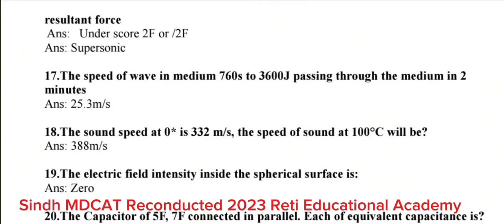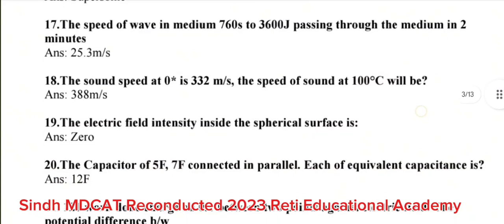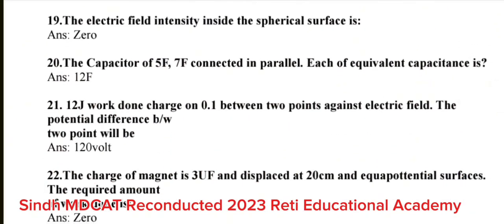Question number 19: The electric field intensity inside the spherical surface is? The correct answer is zero. Question number 20: The capacitor of 5F7F connected in parallel each of equivalent capacitance is? The correct answer is 12F. Question number 21: 12 Joules work done charge on 0.1 between 2 points against electric field. The potential difference between 2 points will be? The correct answer is 120V. Question number 22: The charge of magnet is 3UF and displayed at 20 cm. And equipotential surface. The required amount of work done is? The correct answer is zero.